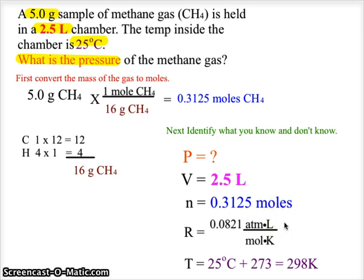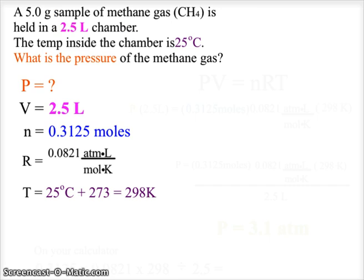Our temperature at 25 degrees Celsius plus 273 gives us 298 Kelvin, because the Celsius temperature must always be converted to Kelvin. So there's our values.